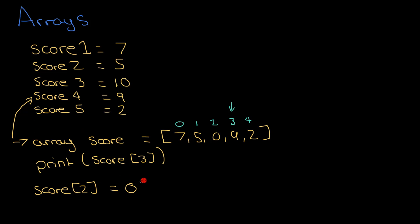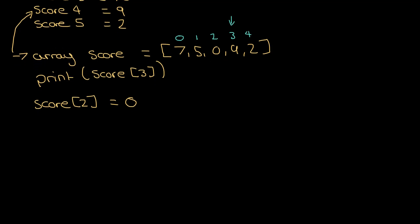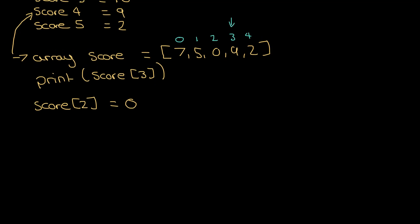So if I printed score two, that would be zero. That's arrays. It's really not that difficult and it will make your life a lot easier. One of the beauties about arrays is that I can start combining them with loops, and that's where things get very interesting.